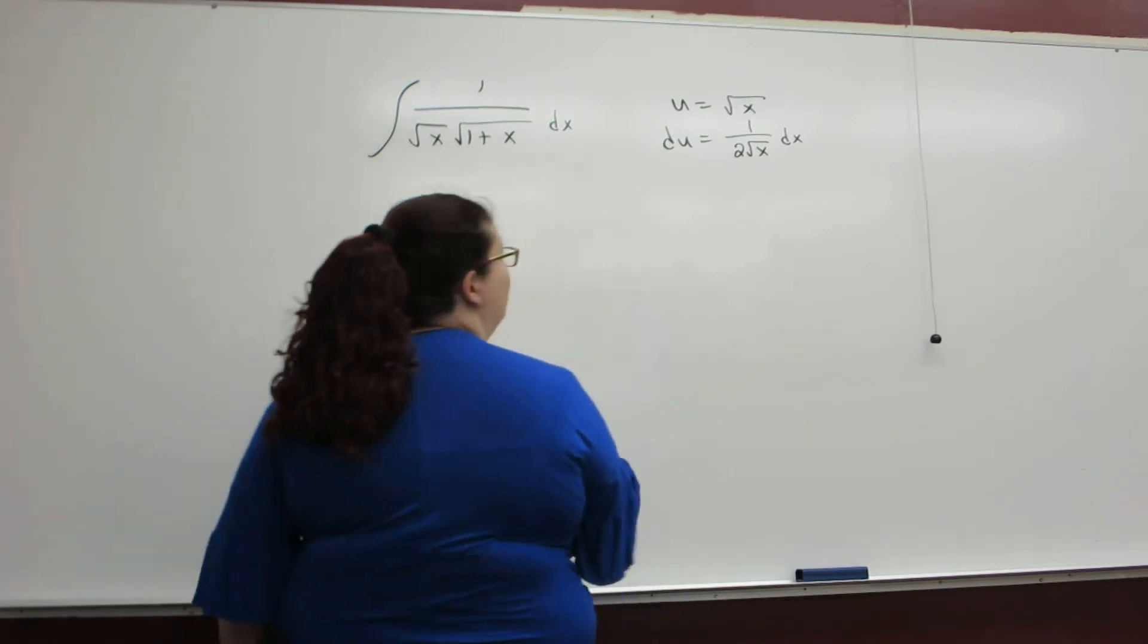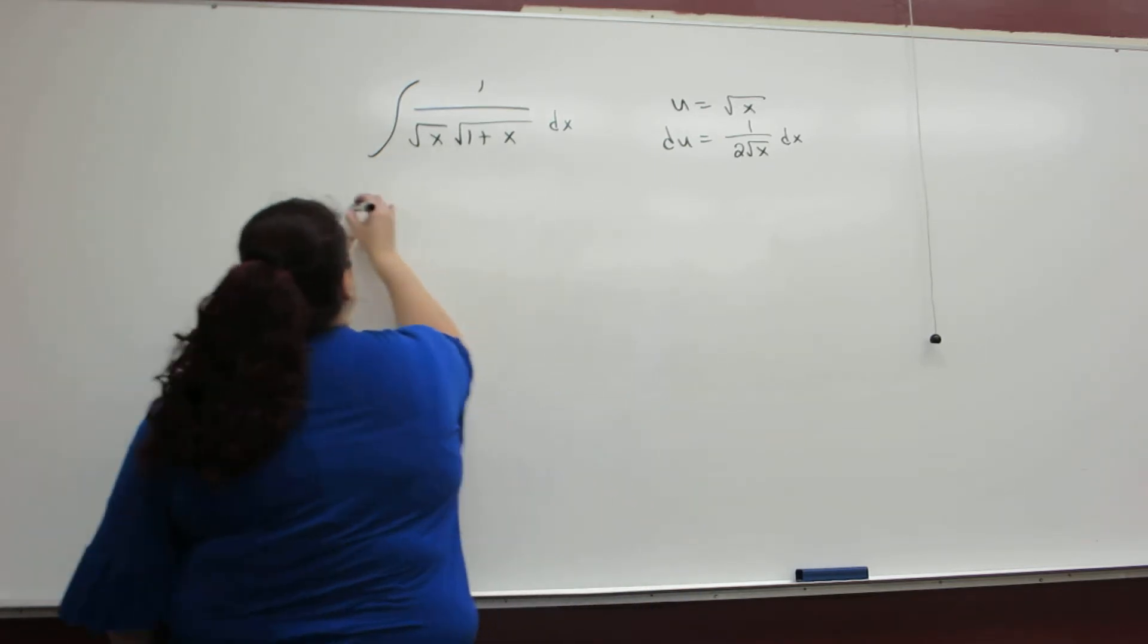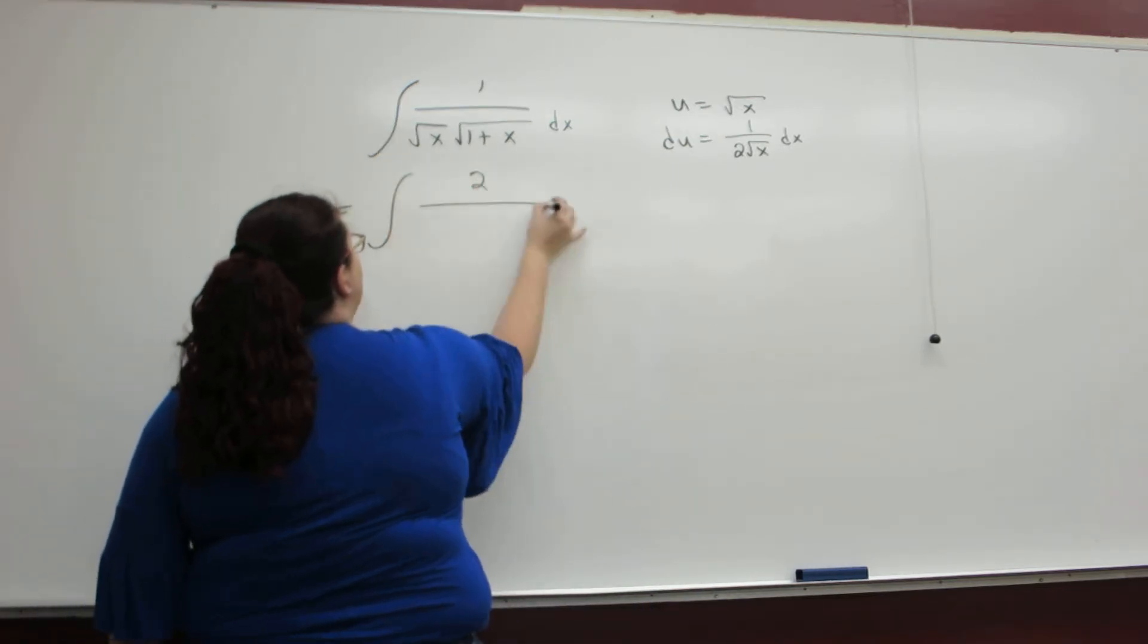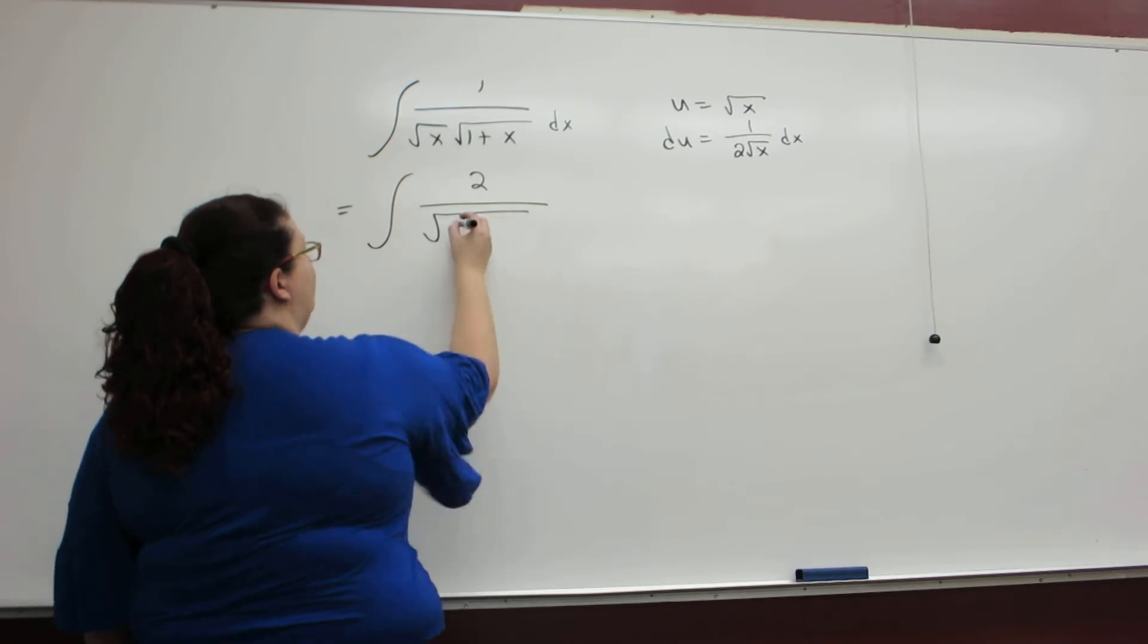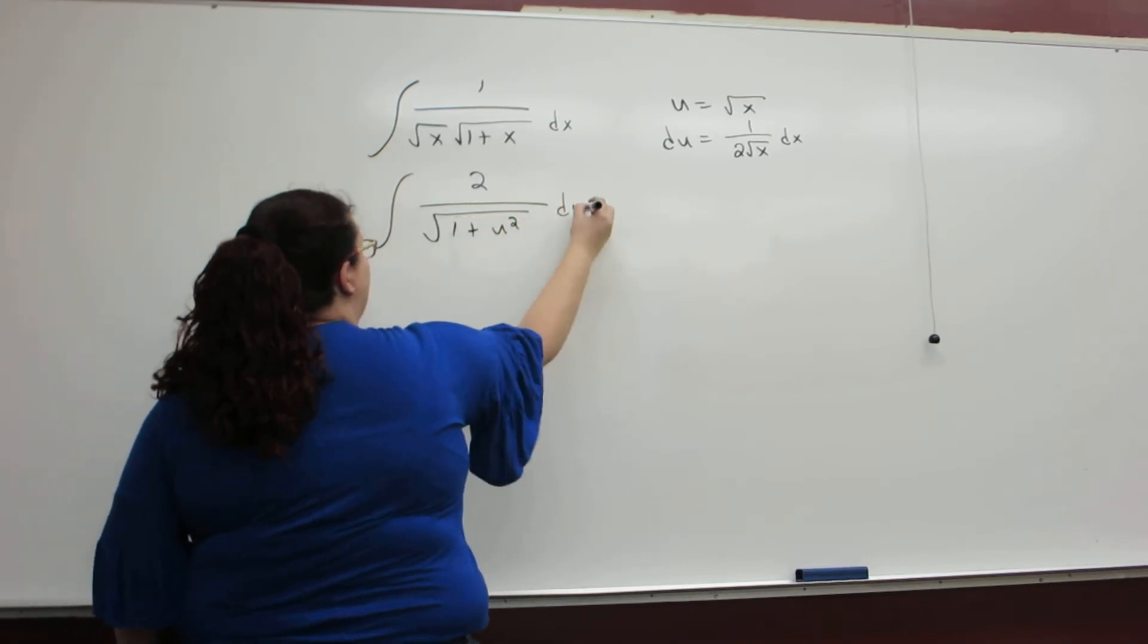I happen to have the 1 over square root of x dx, so this turns into twice this 1 over the square root of 1 plus u squared du.